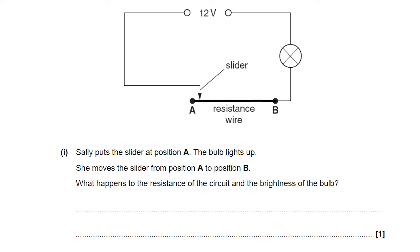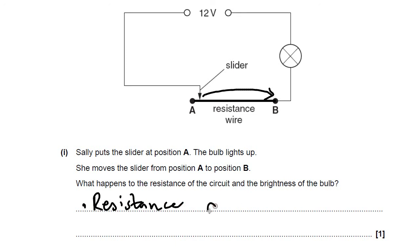She starts the slider here at A. That means the current is travelling through the entire length of the wire, so that's going to be a higher resistance. So as it goes from A towards B, resistance is going to decrease. And lower resistance will mean a higher current, so that means the bulb will become brighter.